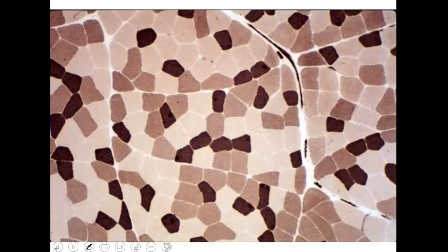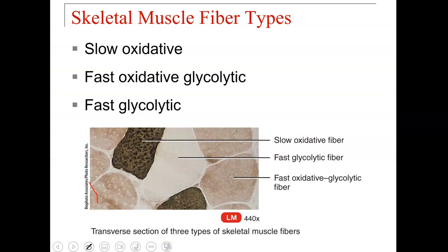When muscle cells are stained for different characteristics, they take on different colors, revealing three different types of muscle fibers. Depending on the textbook, these may have different names, but we have: slow oxidative fibers (darker color), fast oxidative glycolytic fibers (medium color), and fast glycolytic fibers (lighter color).